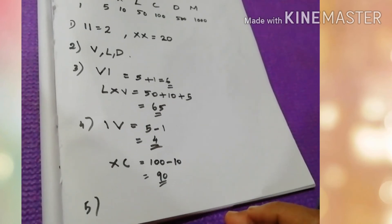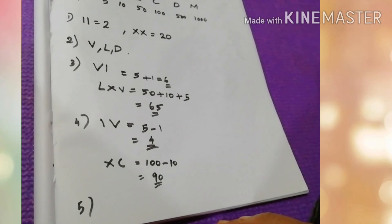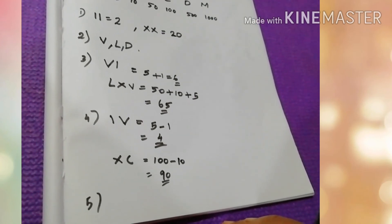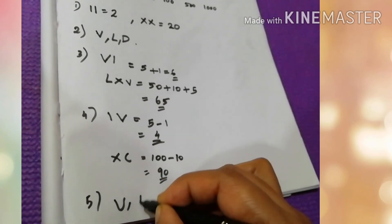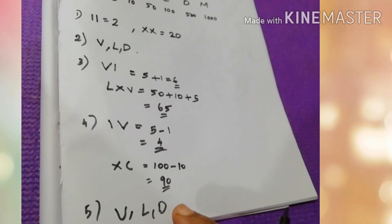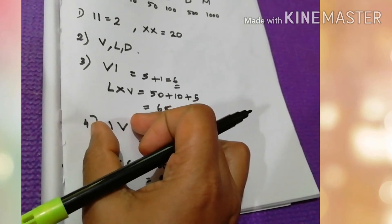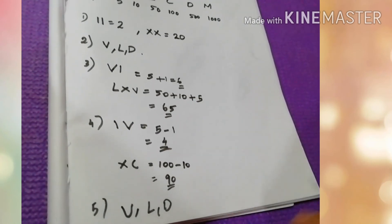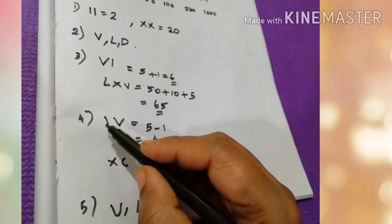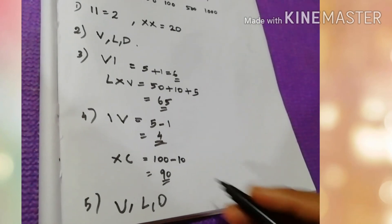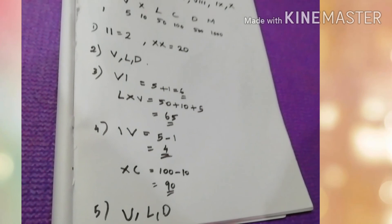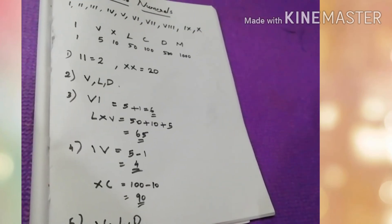Fifth rule: the symbols V, L, and D are never written to the left of a symbol of greater value — that is, V, L, and D are never subtracted. Also, the symbol I can be subtracted from V and X only. And the symbol X can be subtracted from L, M, and C only. You need to study this rule for doing your problems.